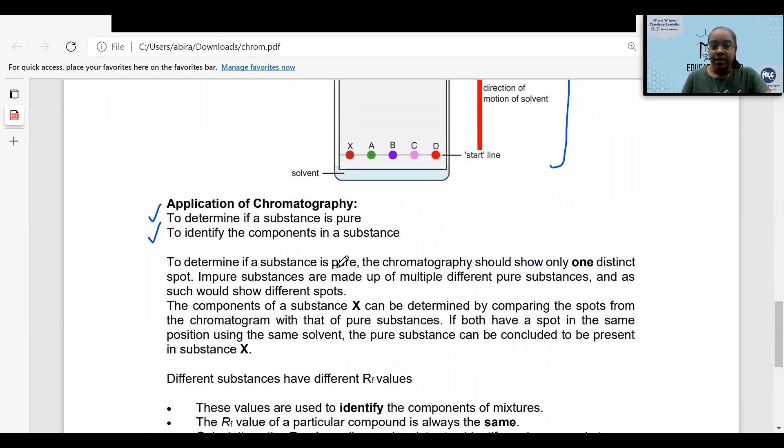To determine if a substance is pure, the chromatography should show only one distinct spot. Impure substances are made up of multiple different pure substances and as such, they will show different spots.